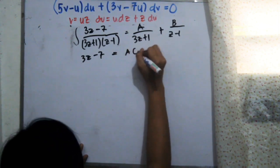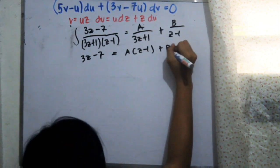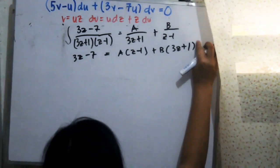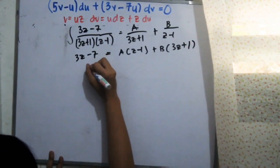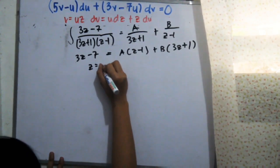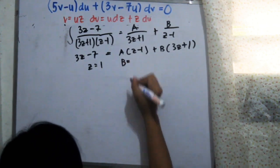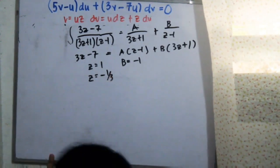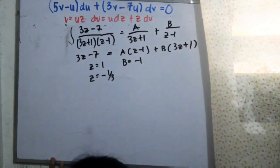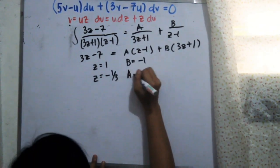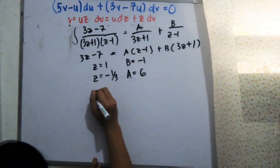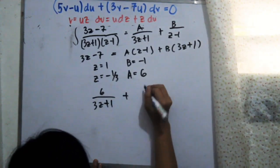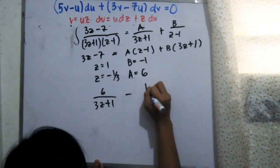Using the LCD we arrive at: A times (z minus 1) plus B times (3z plus 1) over (3z plus 1)(z minus 1). Setting z equals 1, B equals negative 1. Setting z equals negative one-third, A equals 6.